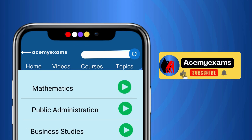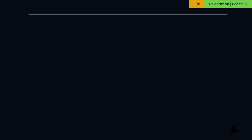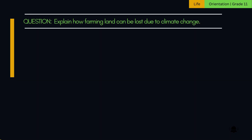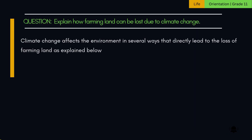Welcome to Ace My Exams Learning. Let us get started with today's learning. Question: Explain how farming land can be lost due to climate change. Climate change affects the environment in several ways that directly lead to the loss of farming land as explained below.